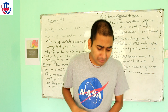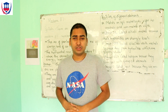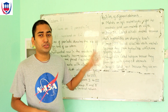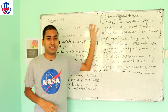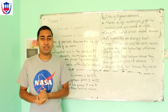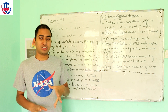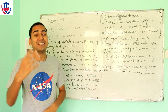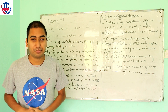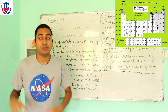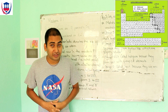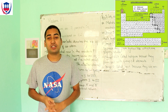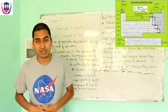Modern Periodic Table is one of the groups. Groups and Periods are key characteristics of the Modern Periodic Table. If you remember correctly, the Modern Periodic Table has 7 Periods and 18 Groups.